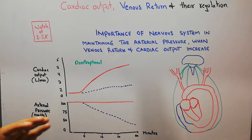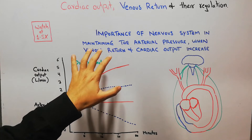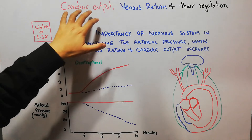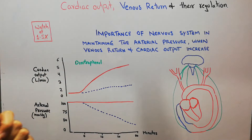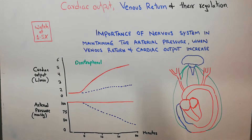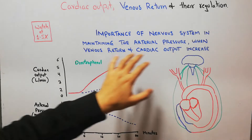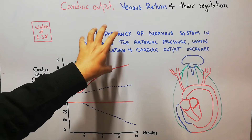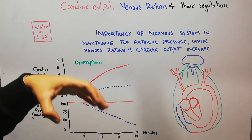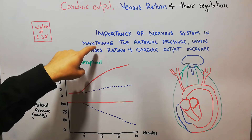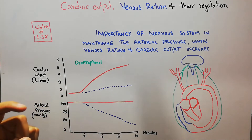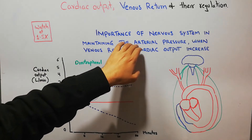Today we are going to discuss the role of the nervous system in controlling cardiac output. We have started a new chapter on cardiac output, venous return, and their regulation, and have discussed different factors which affect cardiac output and venous return. One of the most important factors influencing cardiac output is the nervous system, and today we will discuss its importance in maintaining arterial pressure when venous return and cardiac output increase.